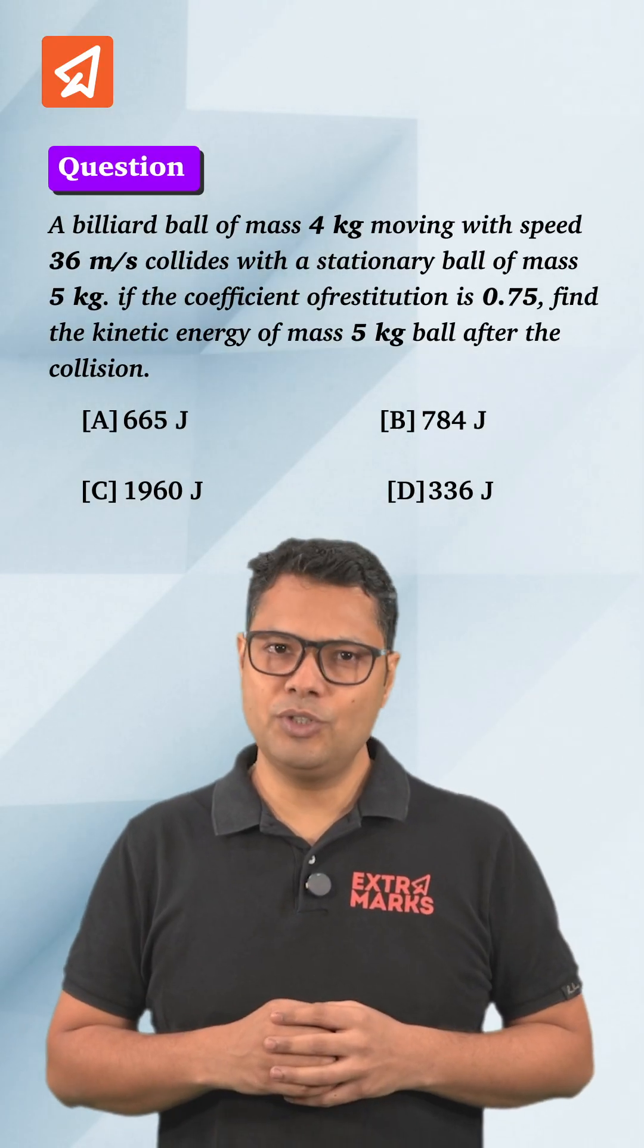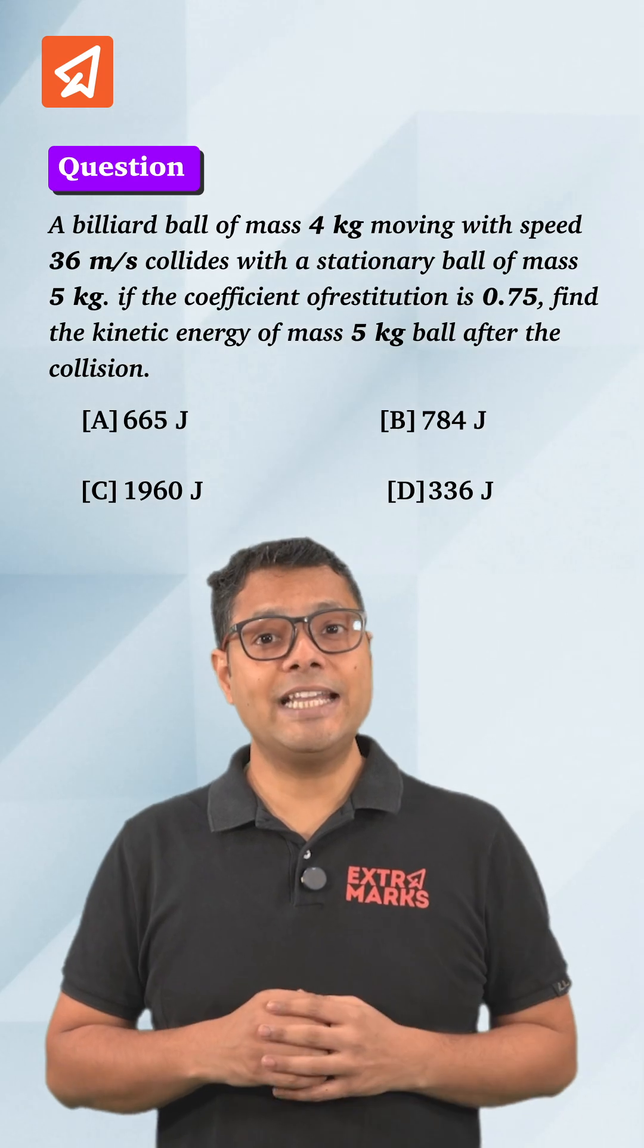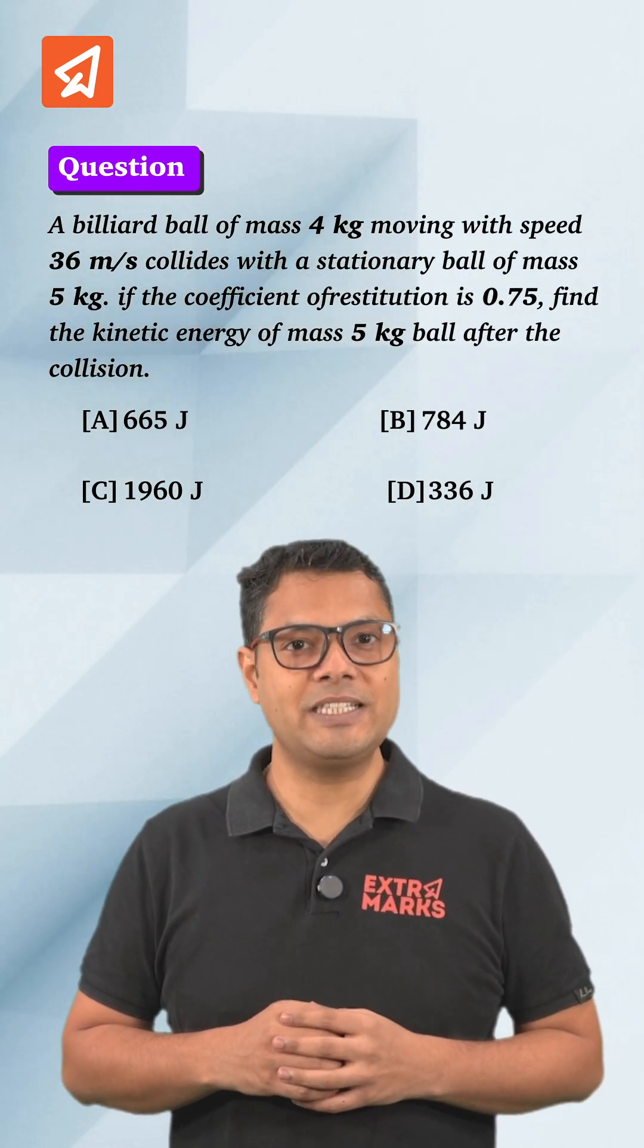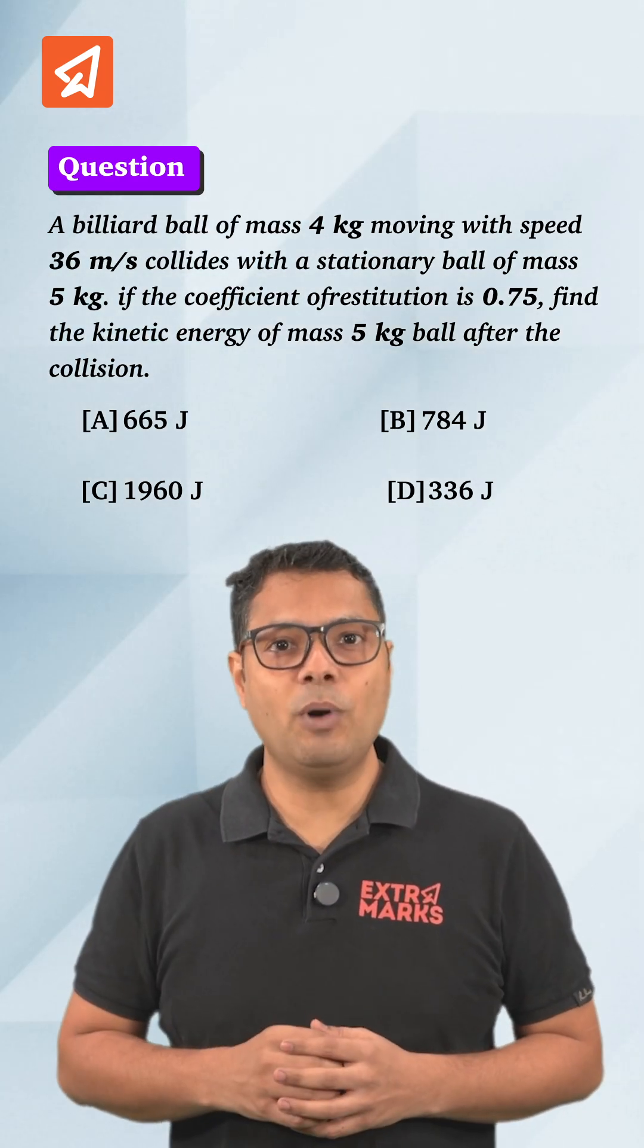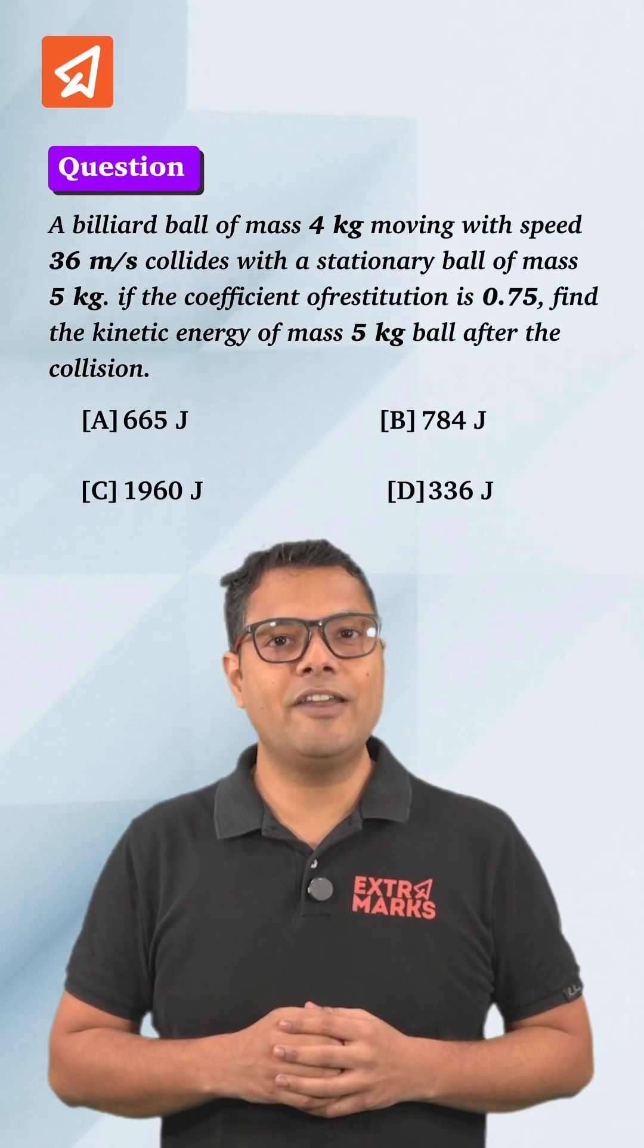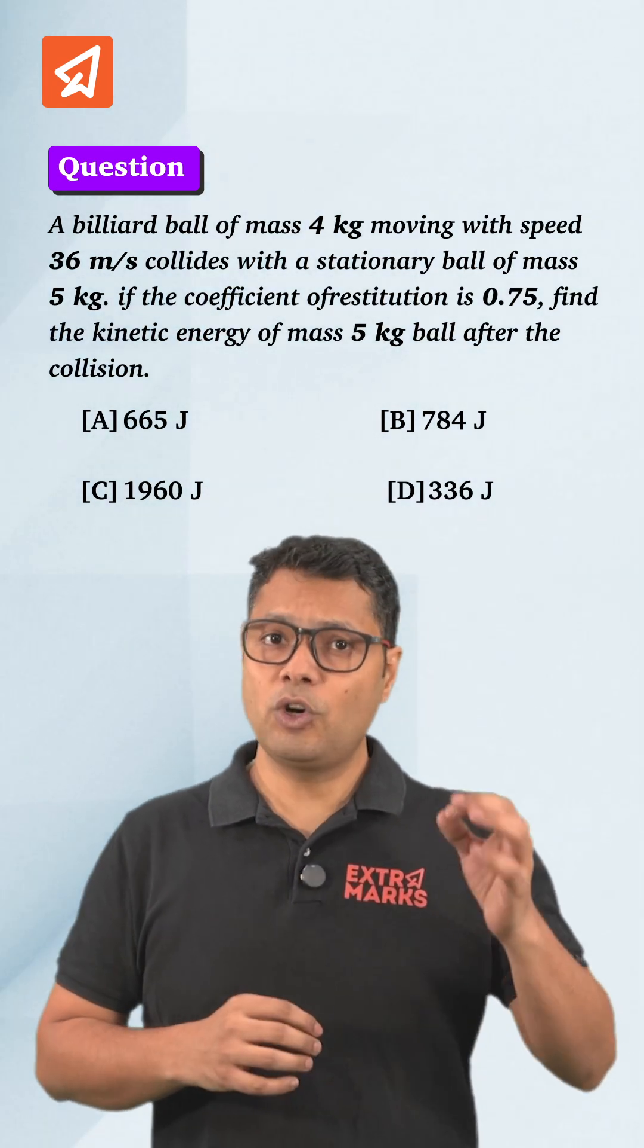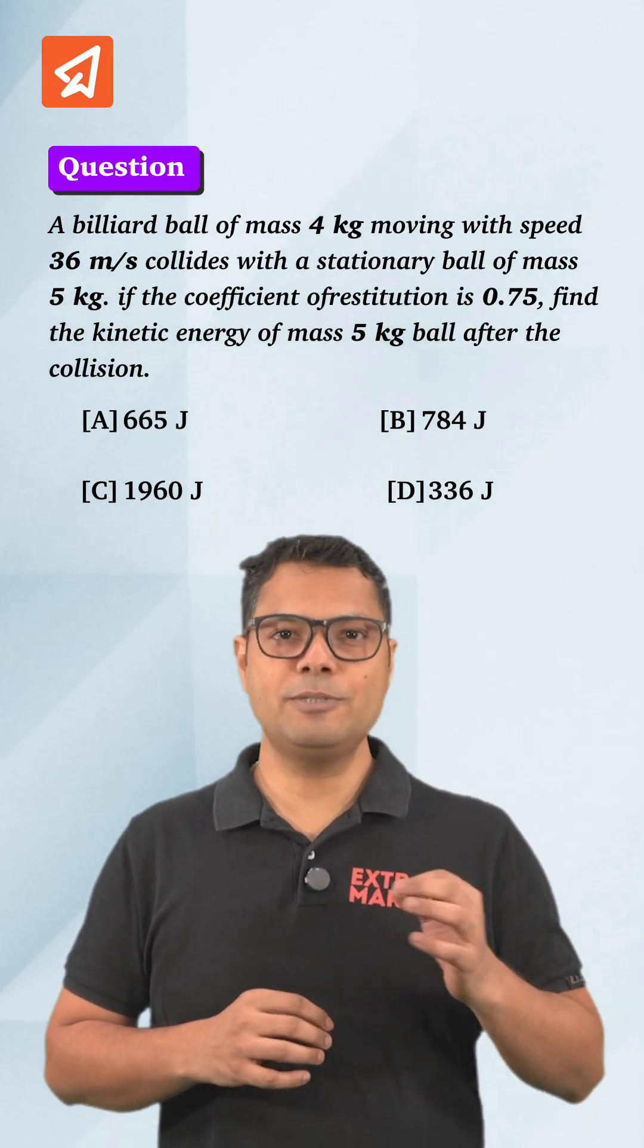Let's solve this PYQ using this trick. So, when a 4 kg billiard ball collides with speed 36 meter per second with stationary 5 kg ball, what will be the kinetic energy of 5 kg ball after the collision if the coefficient of restitution e is 0.75?